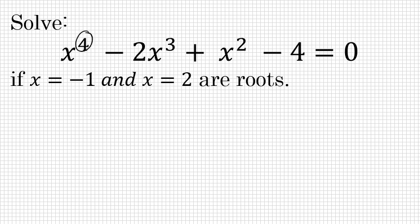Here we have a fourth-degree equation, x to the fourth minus 2x to the third plus x squared minus 4 equals 0. We're given that x equals negative 1 and x equals 2 are roots. That means that those two values for x are solutions to this equation.